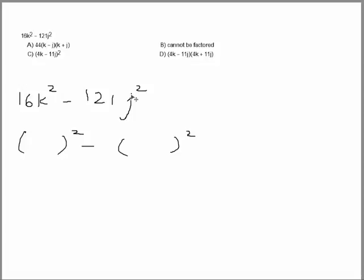What would be the first term? 4k. The second term is 11j, right? Yes. 4k minus 11j, 4k plus 11j.